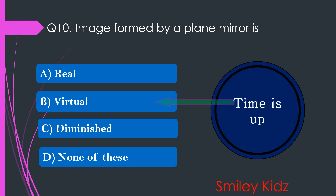Your time is up and the right answer is option B. Virtual. The image formed by a plane mirror is virtual.